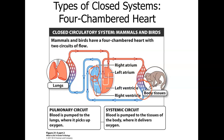From the right ventricle, blood exits through the pulmonary trunk, travels through the pulmonary arteries to the lungs, exchanges carbon dioxide for oxygen, and returns to the heart via pulmonary veins to the left atrium. It passes through the mitral (bicuspid) valve into the left ventricle, then out through the aortic valve into the aorta and arteries, delivering oxygen to body tissues and picking up carbon dioxide.